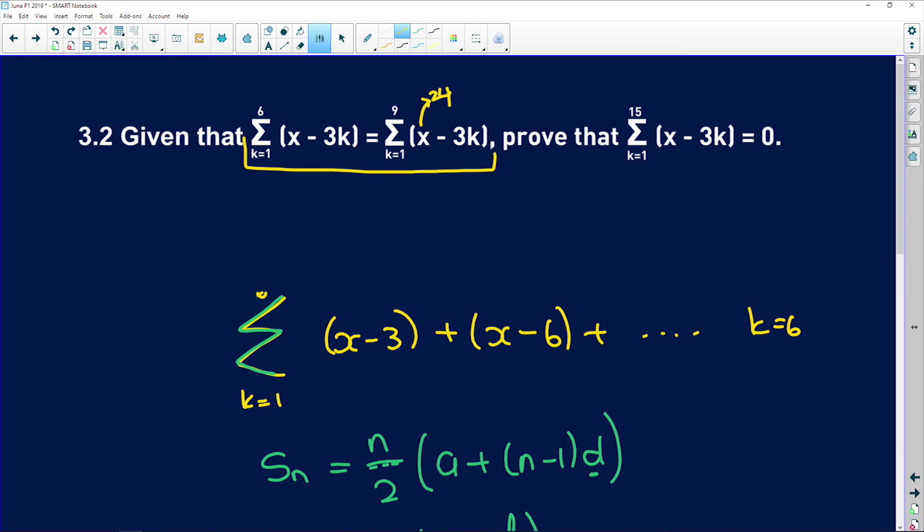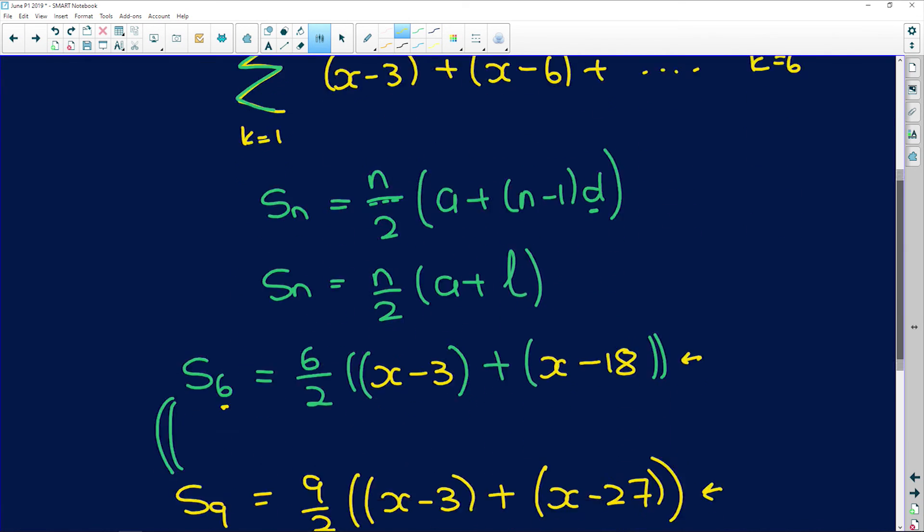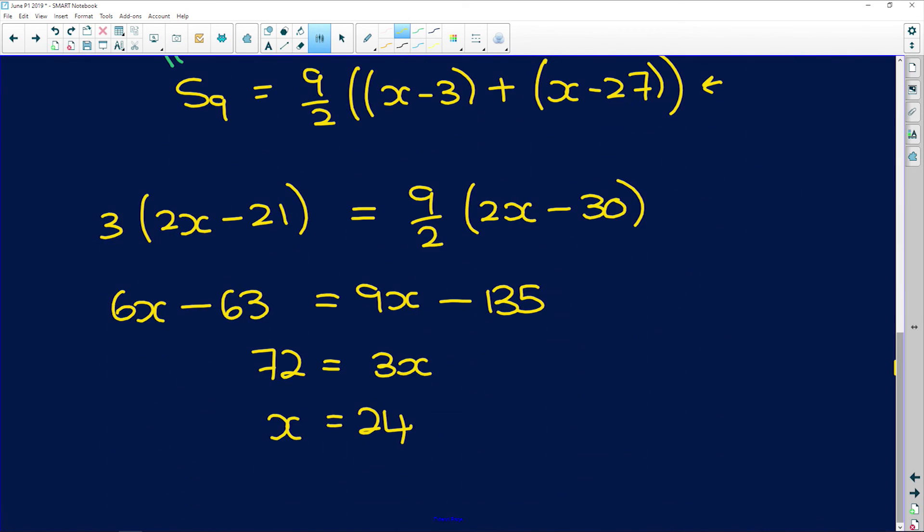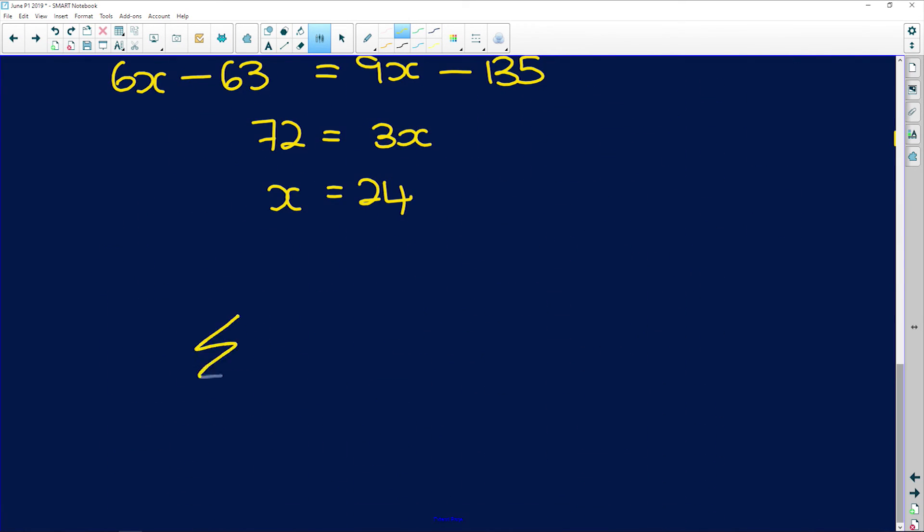We can prove that this sum is true. So sum to the 15 of the same thing, x minus 3k. So here sum k equals 1 to 15 of x minus 3k, we're trying to prove this, required to prove.